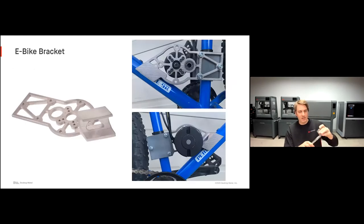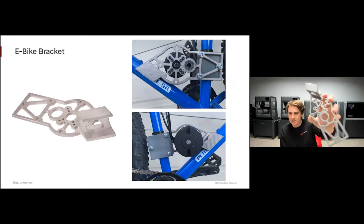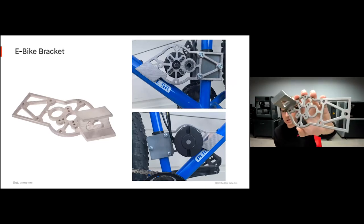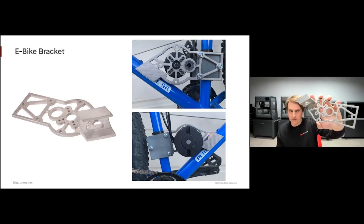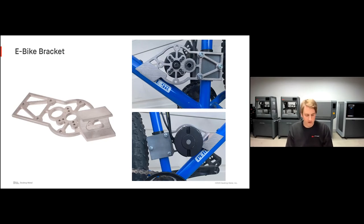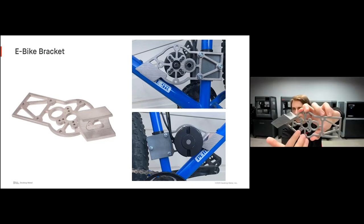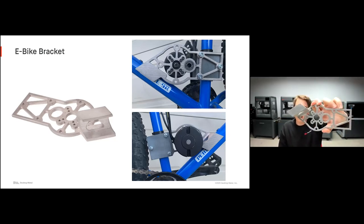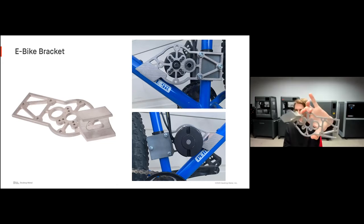A great example is this e-bike bracket — used for holding a motor and a couple of bearings to convert a bike into an electric bike. Rather than machine this part, I just optimized the CAD file, put it on the printer, and in a couple of days had the metal part ready to install. What's especially cool compared to machining is the cutouts incorporated into the part — if I were machining it, I'd have left it solid because more cuts increase cost. By printing it, I removed all that mass, which actually reduces print time, reduces cost, and leads to a lighter, highly optimized component.